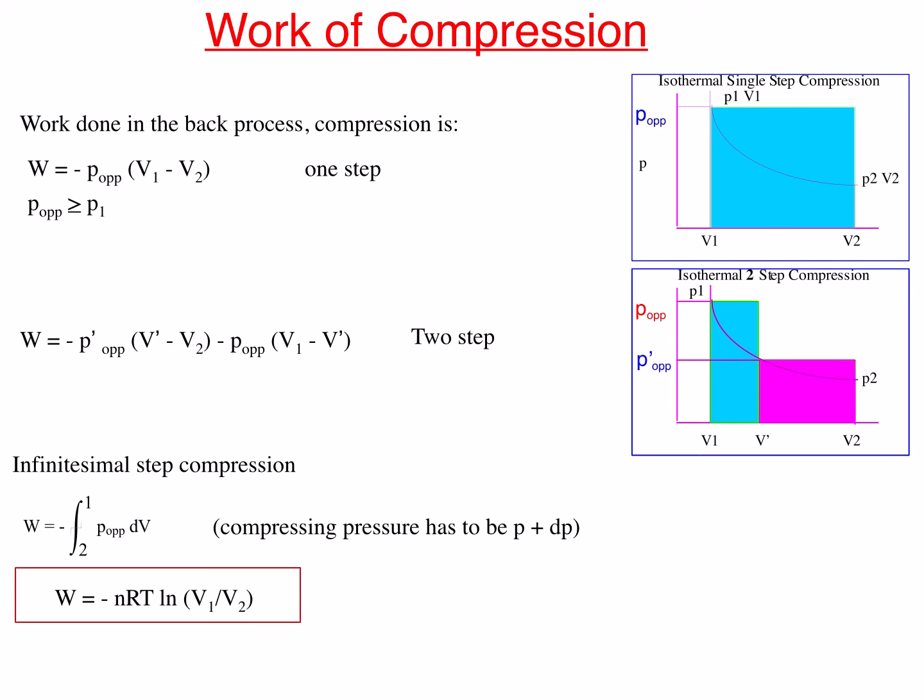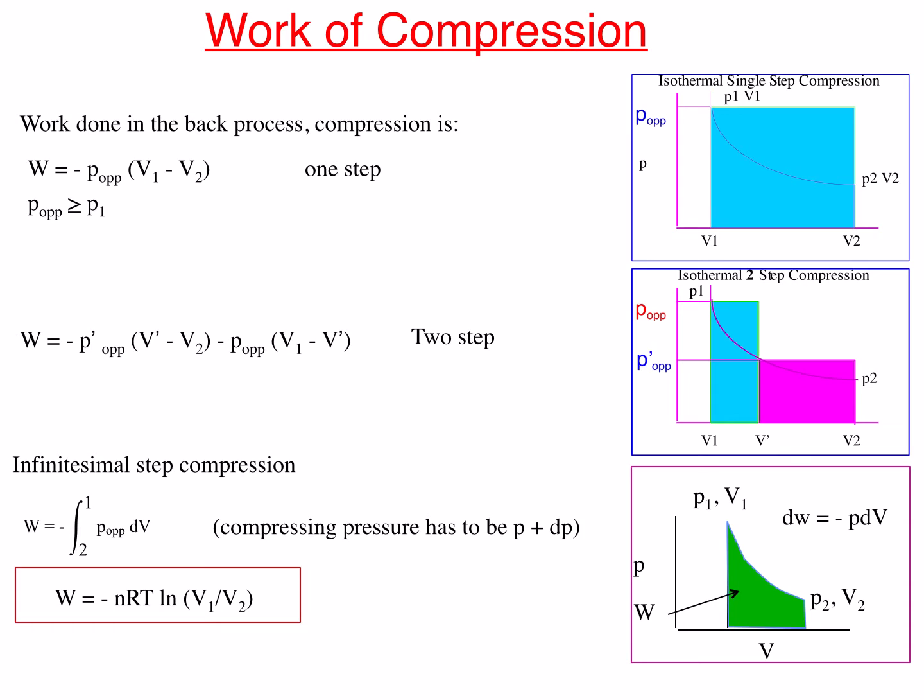The work of compression in a one-step process is the largest, the two-step is less, and the infinitesimal step gives the minimal work of compression. The work of compression in the infinitesimal step is shown in the third diagram, and comparing the areas confirms the work is smallest in the infinitesimal step compression process.